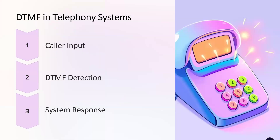About DTMF in telephony systems: the process involves three steps — caller input, DTMF detection, and system response. The user presses keys on their phone keypad, generating DTMF tones that are transmitted over the telephone network. The telephone system's DTMF receiver then detects and decodes the incoming tones, identifying the user's input. The system then processes the input and executes the corresponding action, such as routing the call or triggering an automated response.